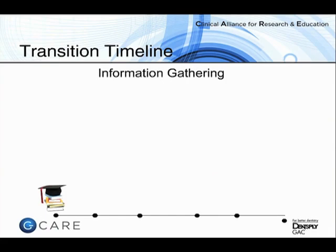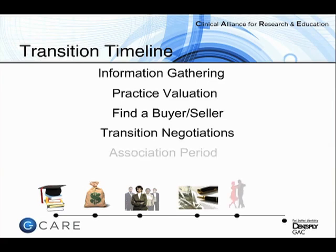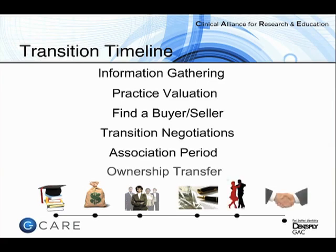The first thing we're going to talk about is the transition timeline. We have six steps on this slide. The first is the information gathering process. The next is the practice valuation piece and finding a buyer or seller — these two items are actually interchangeable. We represent a lot of sellers; some come to us without a buyer yet and want to start the valuation process simultaneously, while others already have a buyer in mind and are ready to get the process started.